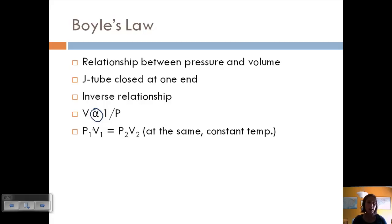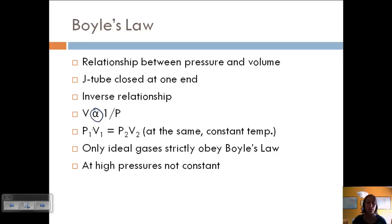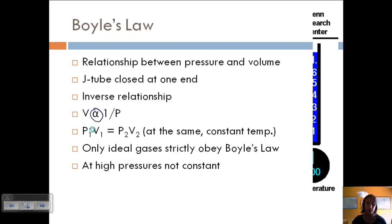We can use this to write an equation where P1V1 equals P2V2, and so we can use that to find different pressures or volumes. Now, the thing that has to be the same, though, is the temperature. Temperature has to be constant. Only ideal gases strictly obey Boyle's Law. So it's a general relationship, but it's not always going to work out perfectly, especially at high pressures.